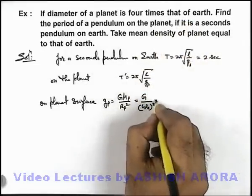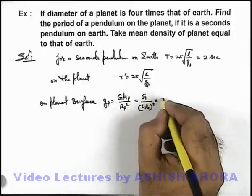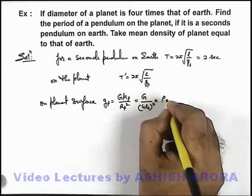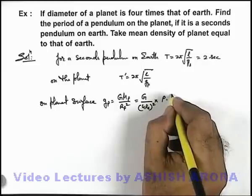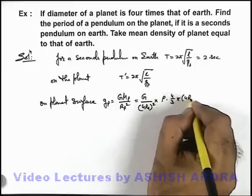Multiplied by if we substitute the mass of planet that will be density of Earth multiplied by its volume, that is 4/3 π times 4Rₑ cubed.